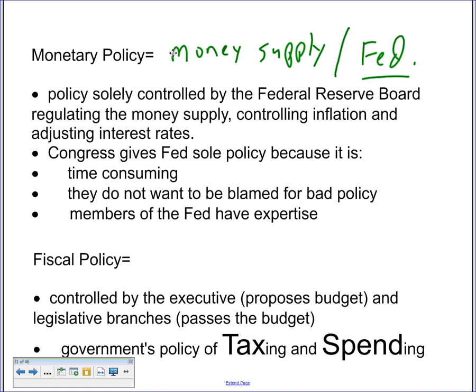We'll be coming back to monetary policy later. What I want to get into more is fiscal policy, which is controlled by the executive branch — who proposes a budget annually — and then the legislative branch, both the House and the Senate, are the ones that actually pass it. The simple definition of fiscal policy is tax and spend.